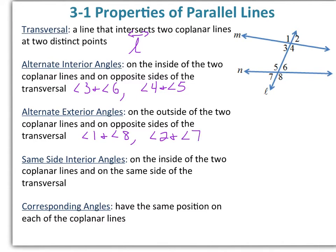Same side interior angles are on the inside of the two coplanar lines and on the same side of the transversal. We have two pairs: angle 3 and angle 5, and angle 4 and angle 6.